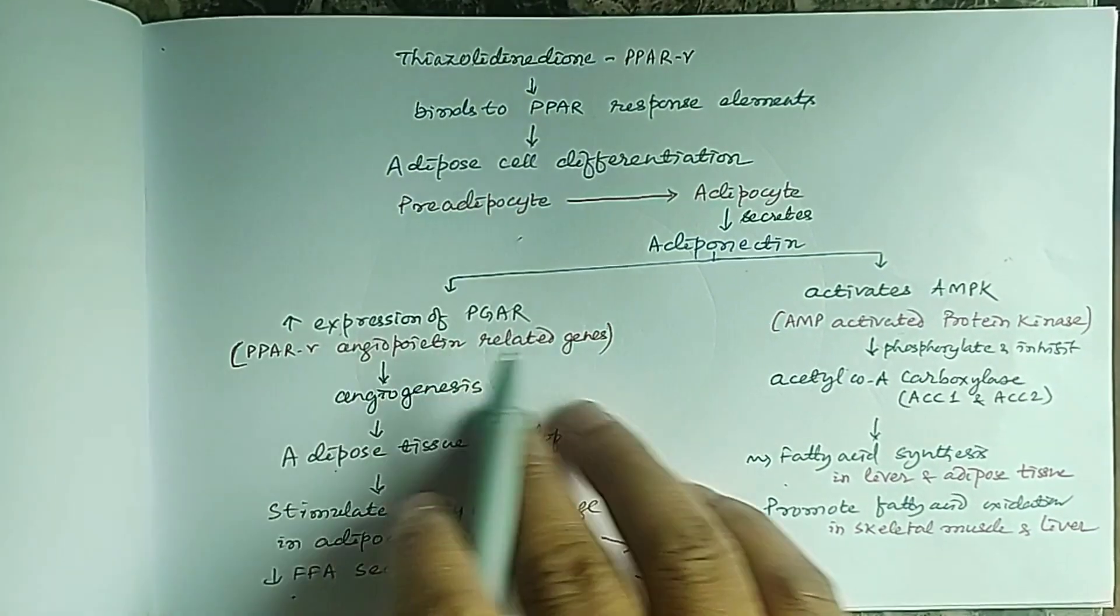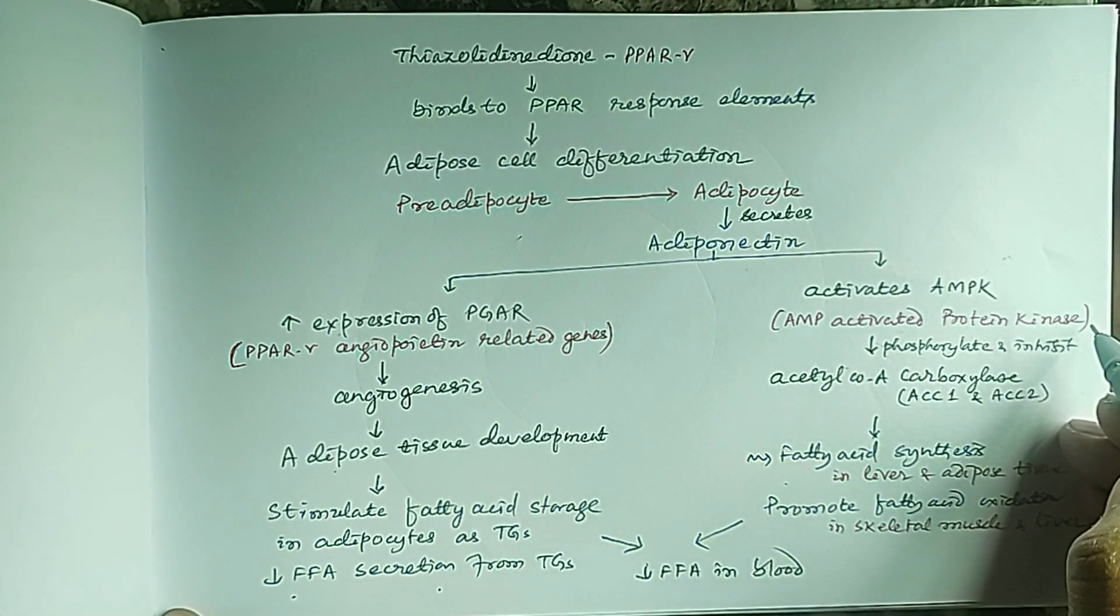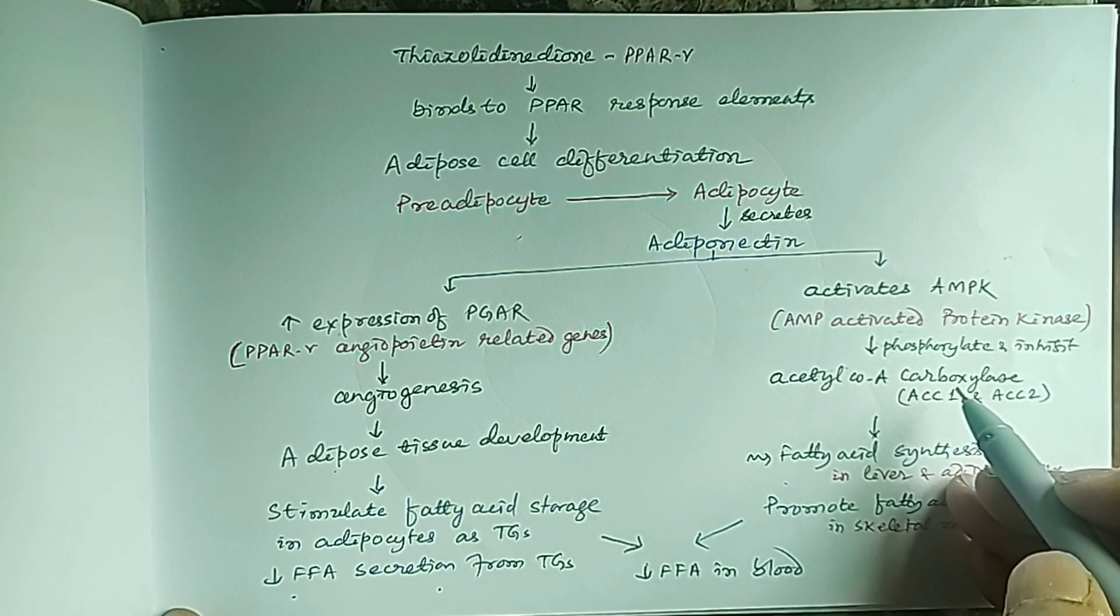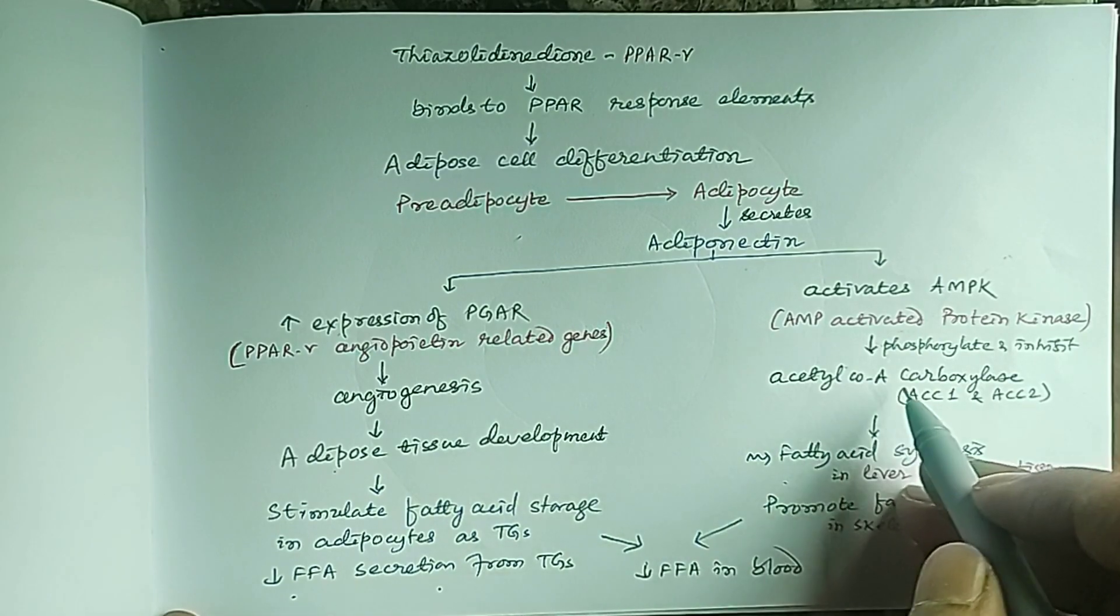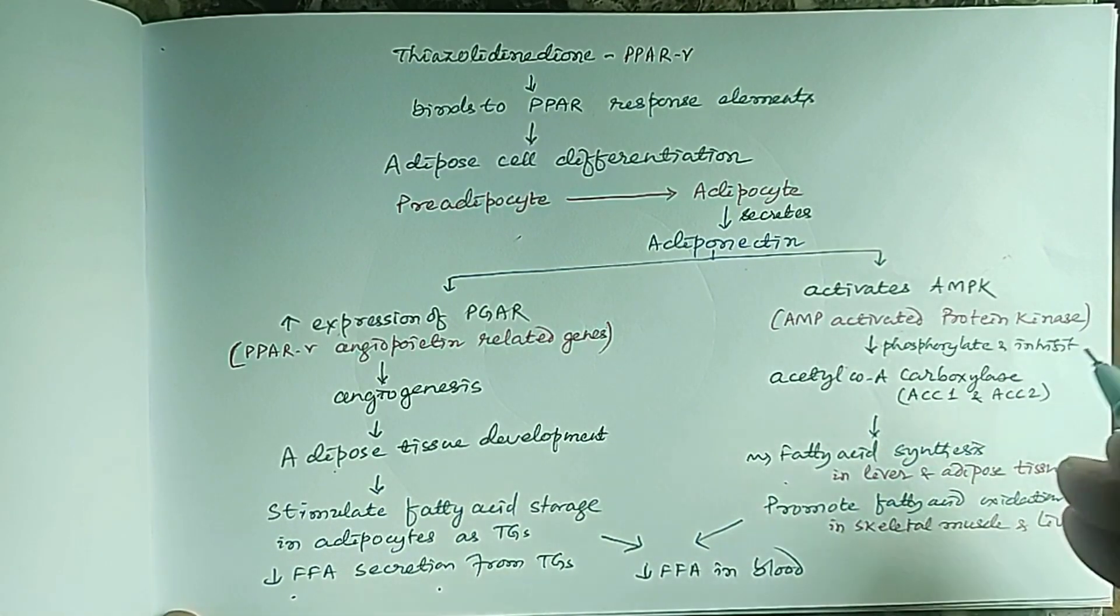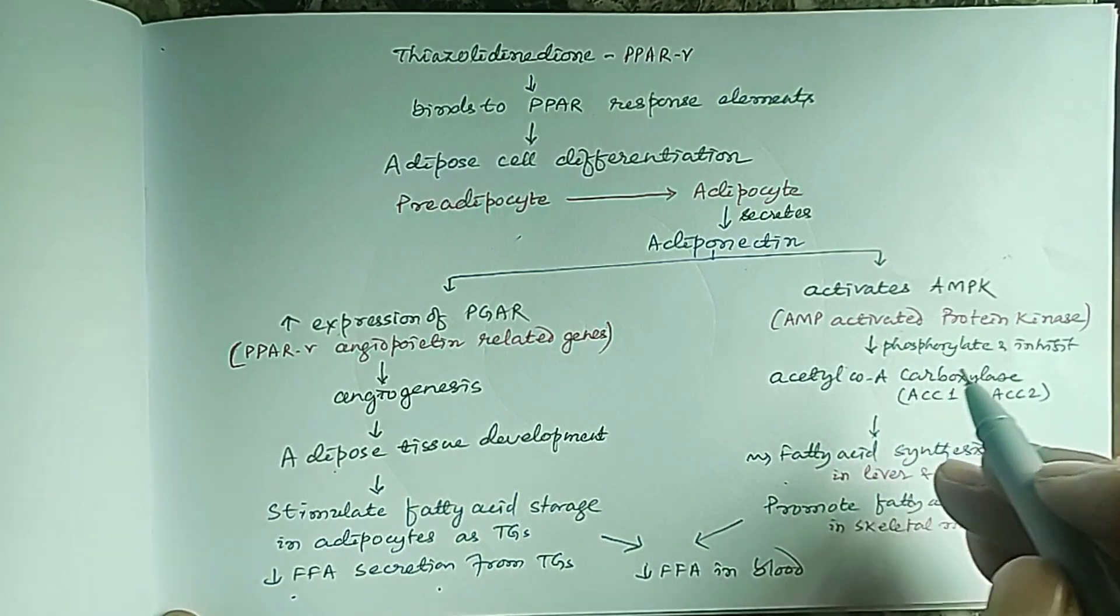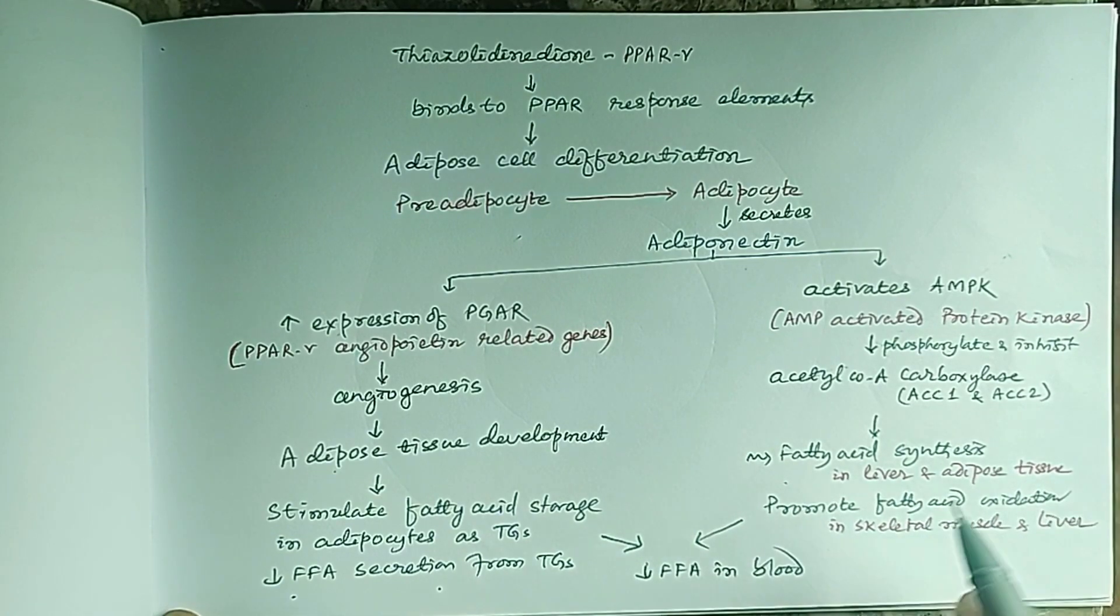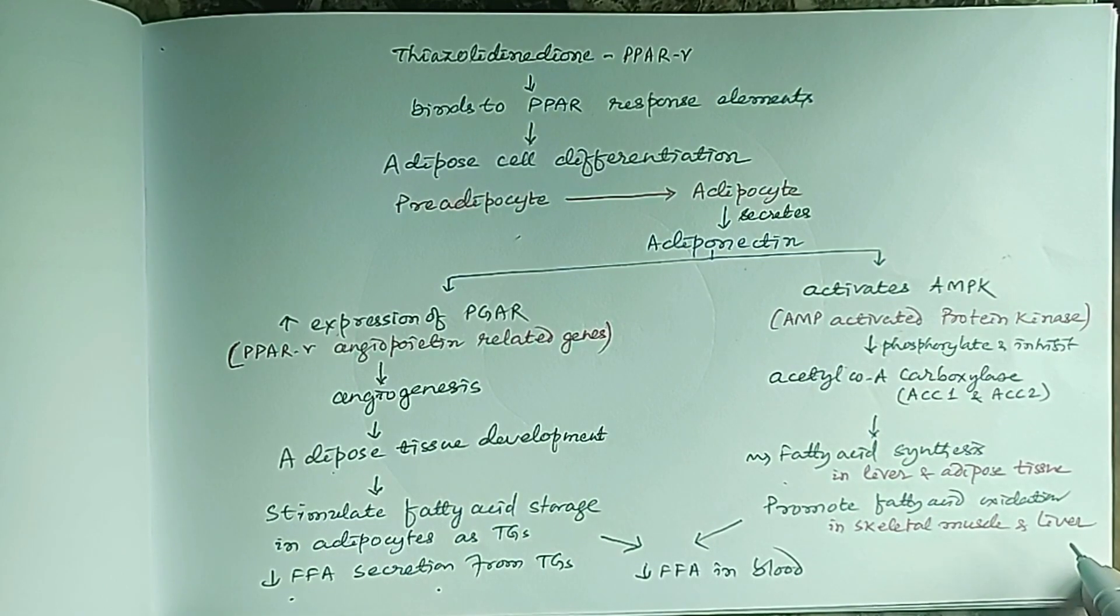The second function of adiponectin is it activates AMPK, AMP-activated protein kinase, which will phosphorylate acetyl-CoA carboxylase, a key enzyme in fatty acid synthesis and beta-oxidation. By phosphorylation, this enzyme becomes inhibited, resulting in inhibition of fatty acid synthesis in liver and adipose tissue, and promotion of fatty acid oxidation in skeletal muscle and liver.